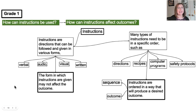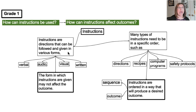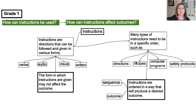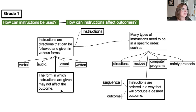In grade one, we move it forward a little bit and ask: how can the instructions affect the outcomes? We look at giving instructions in different forms and receiving instructions given in a specific order — directions, recipes, computer programs, and safety protocols. The bold around these boxes represents the understandings: the form the instructions are given in may not affect the outcome, but it may. And that's where that sequence comes in. Lots of similarity between what's coming out in kindergarten and in grade one.